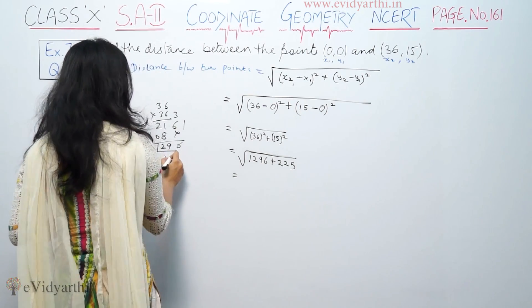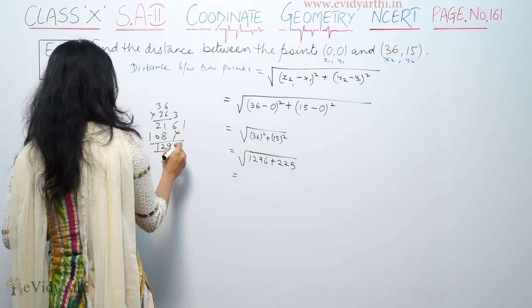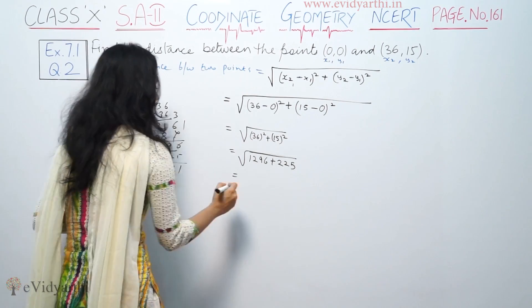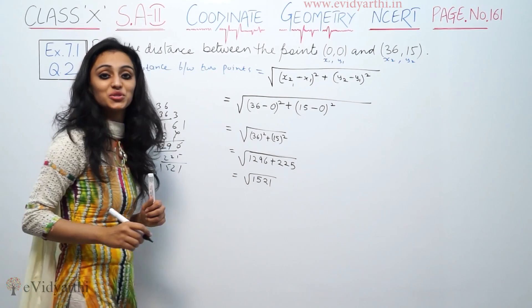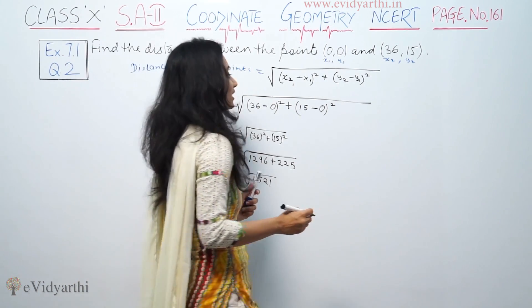So, 1296 plus 225 is 1521. Now we need the square root of 1521. Let me solve this problem by prime factorization.